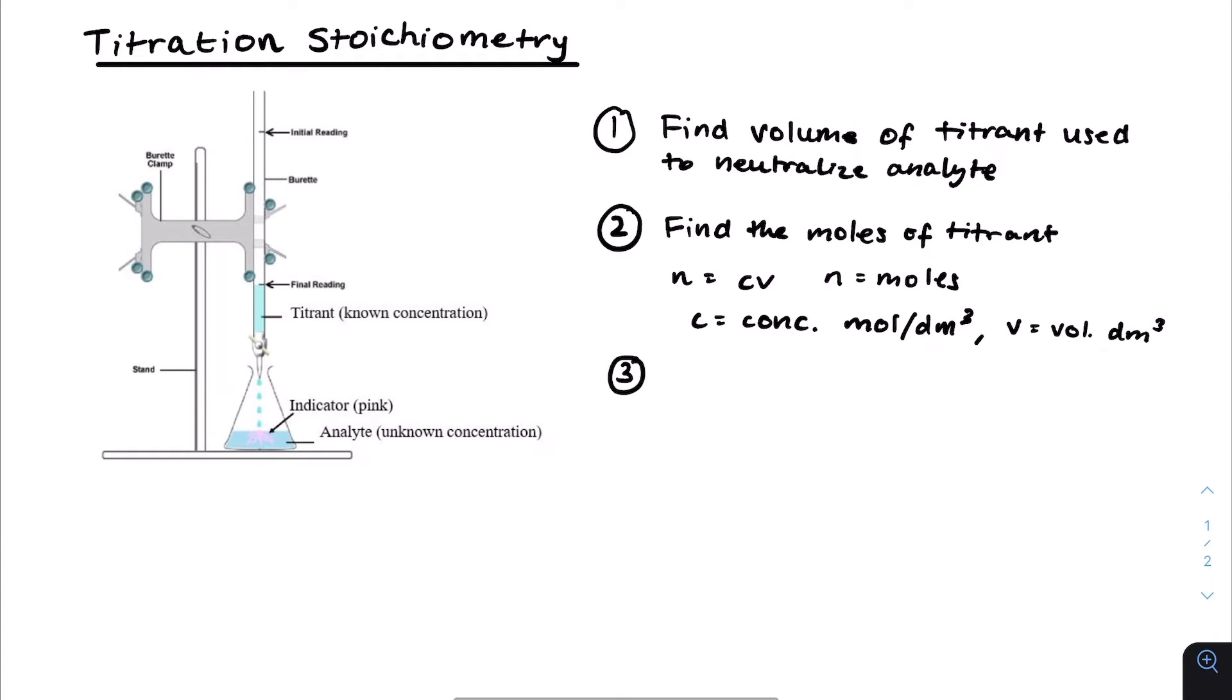Now, question three is apply molar ratios. So what this means is, I'll take a very common example. Let's say you had NaOH plus HCl, creates NaCl plus H2O. This is a very common titration example.